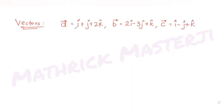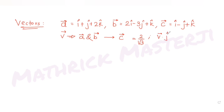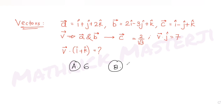Vector v is in the plane of a and b. The projection of v on c is 2/√3. Also, the dot product of vector v and ĵ is 7. We need to find v·(î + k̂). The answer choices are 6, 7, 8, and 9.